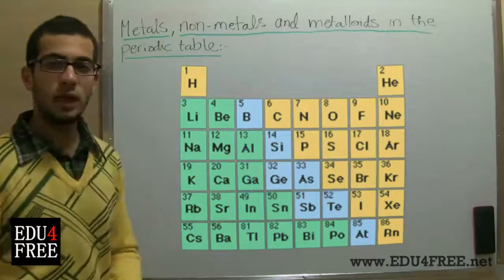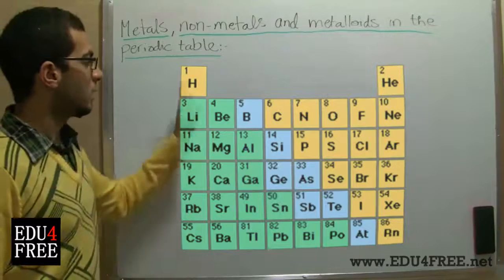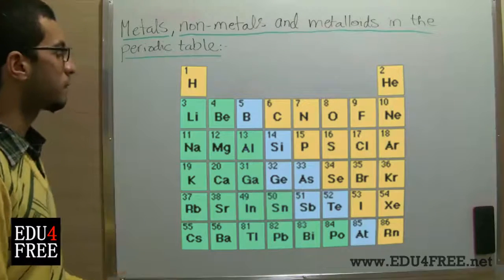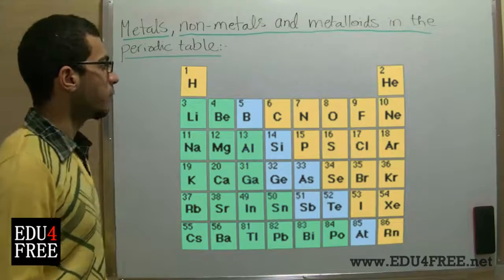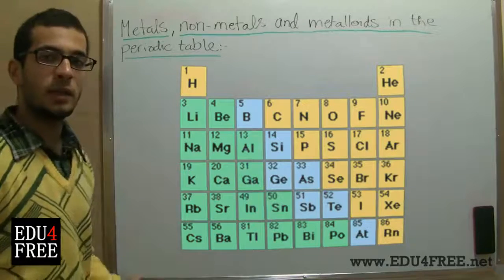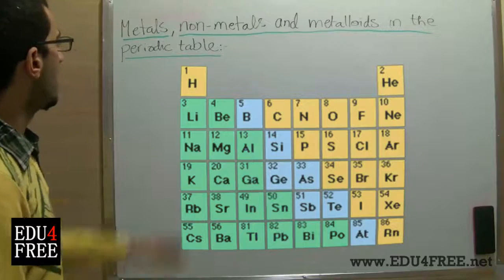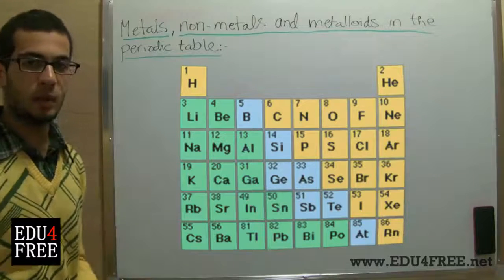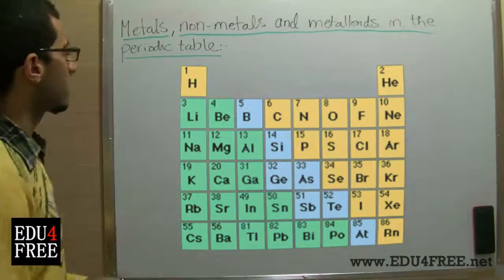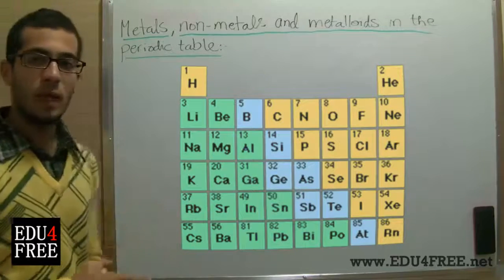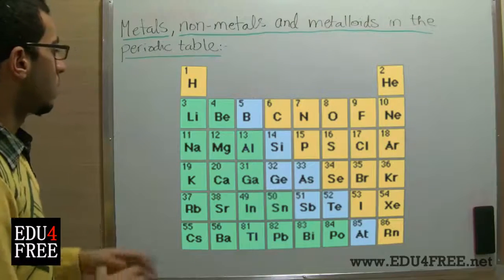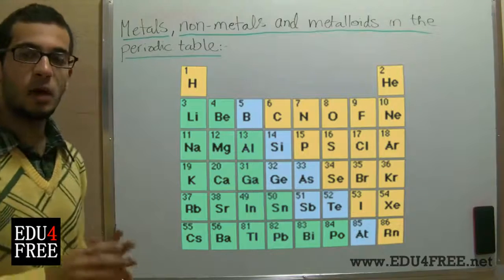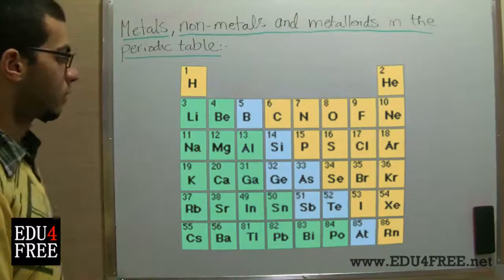As we go from left to right, we have the highest metallic property in group 1 on the left and the highest nonmetallic property in group 7. As we go down a group, the atomic radius increases. In metals, this increasing atomic radius enhances the metallic property because metals have low ionization potential and low electron affinity, and a larger atomic radius achieves this further.